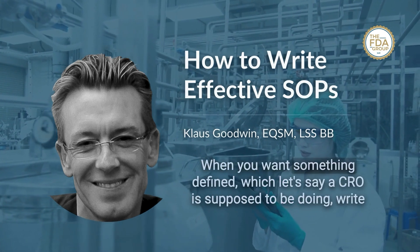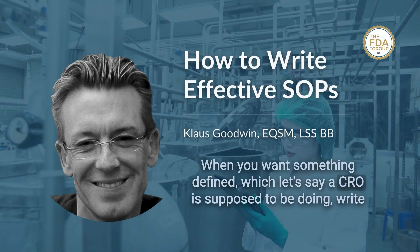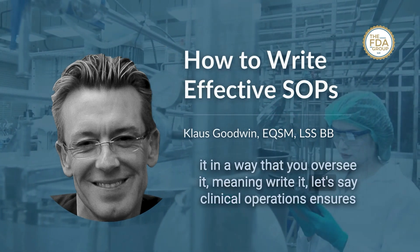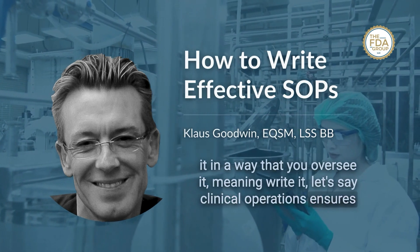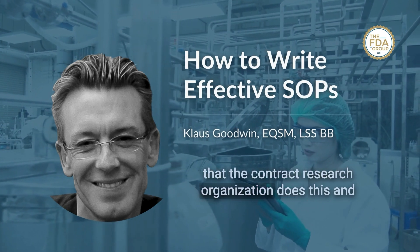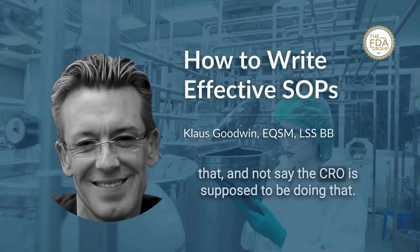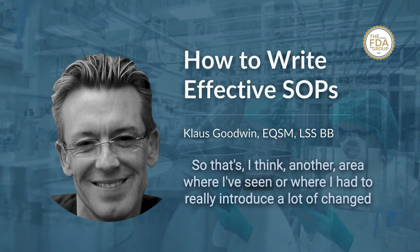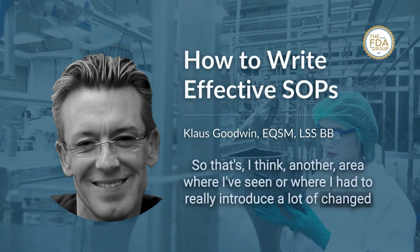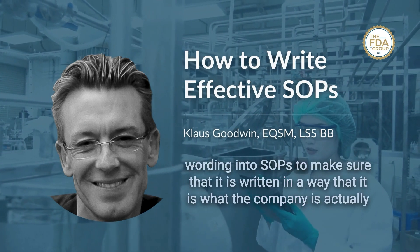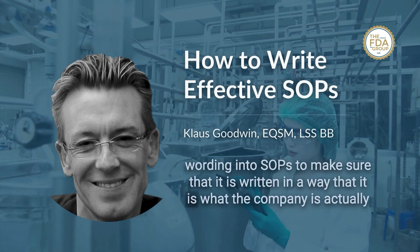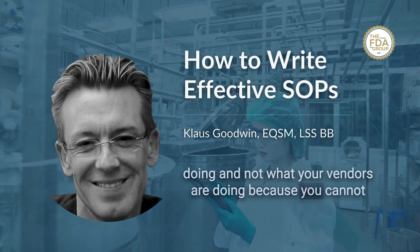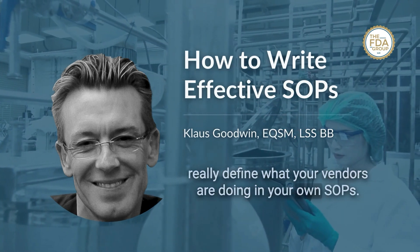The last point is to keep your vendors out of your SOPs. When you want to define something a CRO is supposed to do, write it in a way that reflects your oversight — for example, say 'clinical operations ensures that the contract research organization does this and that,' rather than saying the CRO is supposed to do it. You cannot really define what your vendors are doing in your own SOPs.